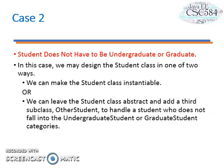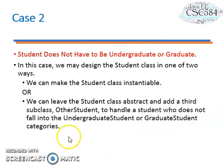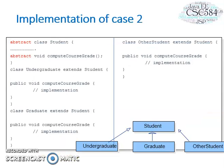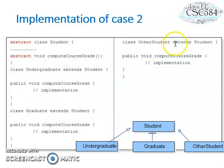Next, let's look at case two, where a student does not have to be undergraduate or graduate. In this case, we may design the student class in one of two ways: first, we can make the student class instantiable, meaning we can create a student object; or we can leave the student class abstract and add a third subclass called OtherStudent to handle students who do not fall into either category. So we declare abstract class Student with abstract void computeCourseGrade, and have three subclasses: Undergraduate extends Student, Graduate extends Student, and OtherStudent extends Student. Notice that computeCourseGrade is implemented in each of the subclasses.